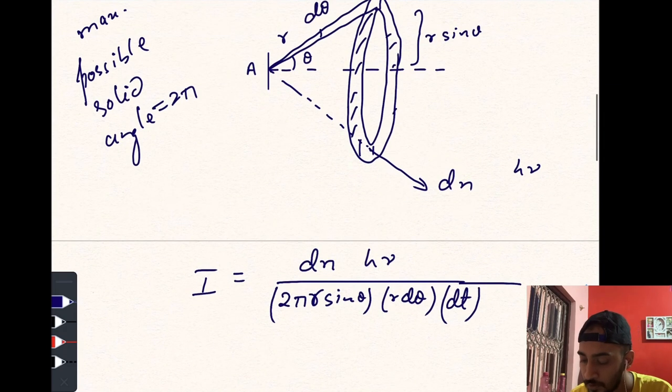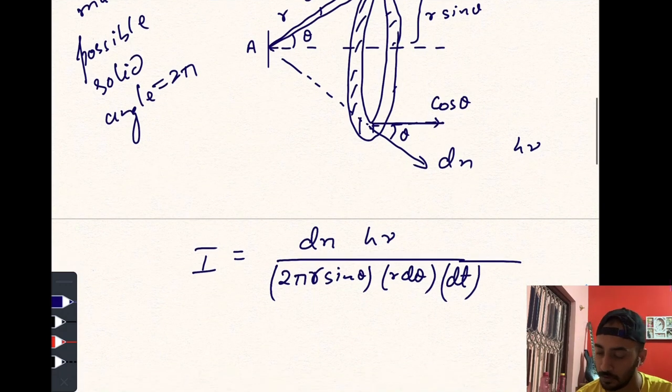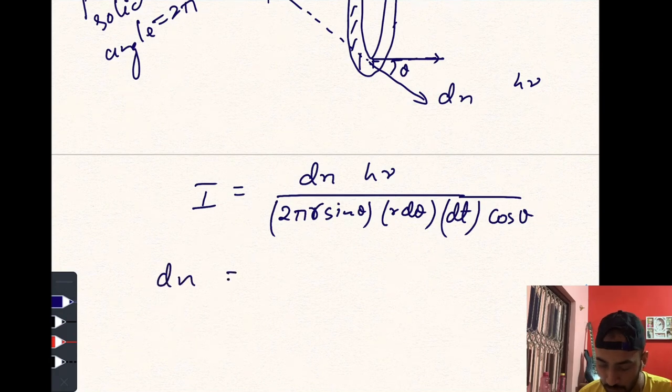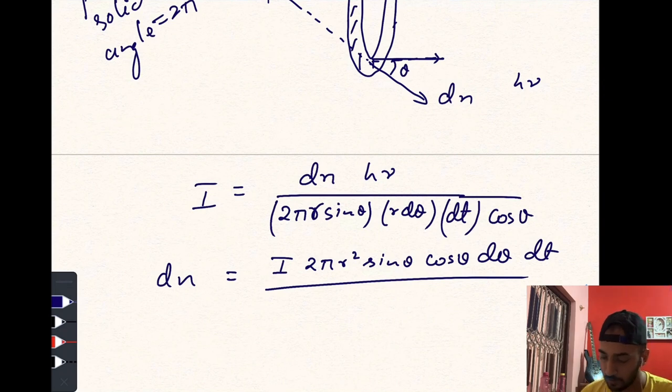Now if we write dn, it would be I × 2π r² sin θ cos θ dθ × dt divided by hν.